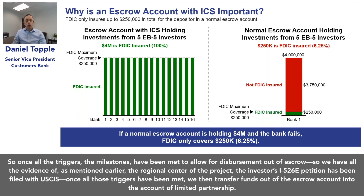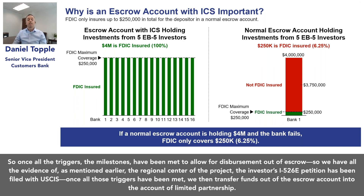Once all the triggers and milestones have been met to allow for disbursement out of escrow — we have all the evidence of the regional center, the project, and the investor's I-526E petition has been filed with USCIS — once all those triggers have been met, we then transfer funds out of the escrow account into the account of limited partnership.